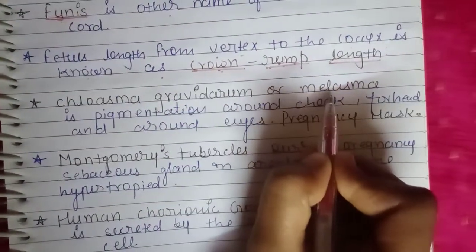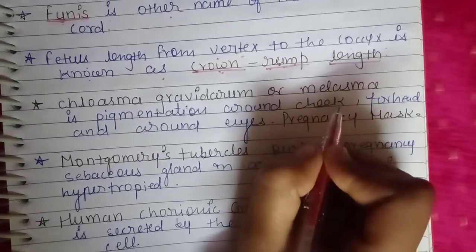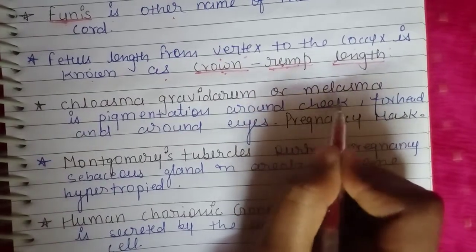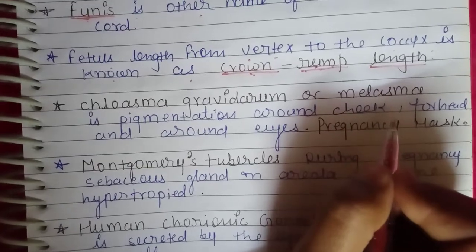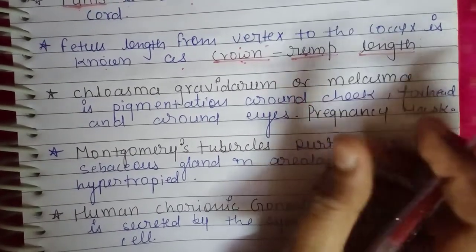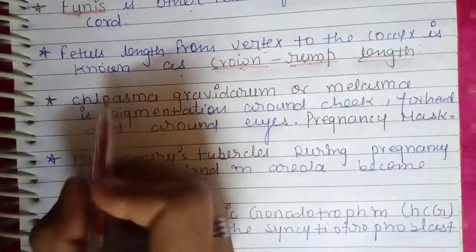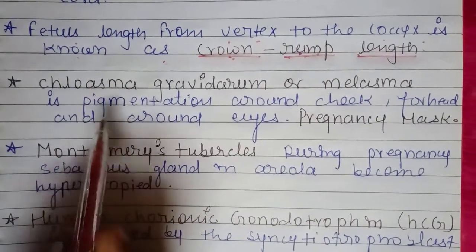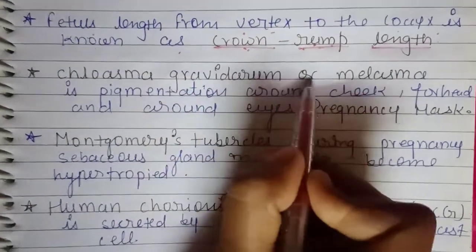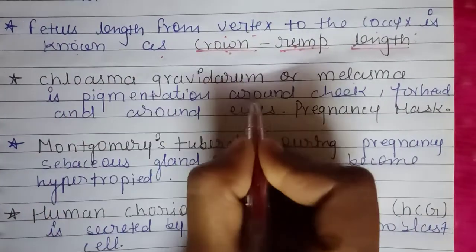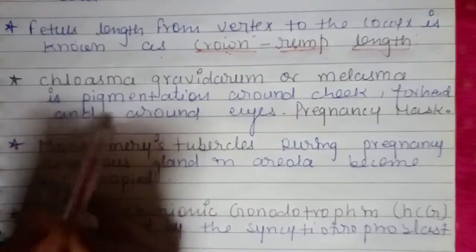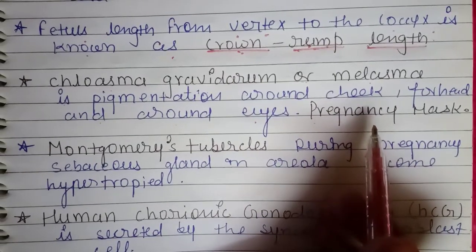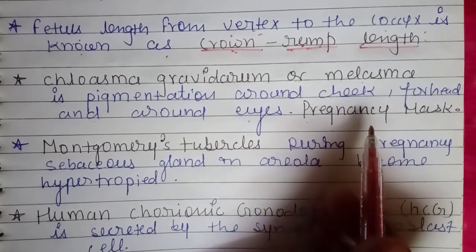Next we have chloasma gravidarum and melasma. During pregnancy, around 20 to 24 weeks, some marks or pigmentation appear on a pregnant lady's face. In medical terms, this pigmentation around the cheeks, forehead, and around the eyes is known as chloasma gravidarum, melasma, or pregnancy mask.